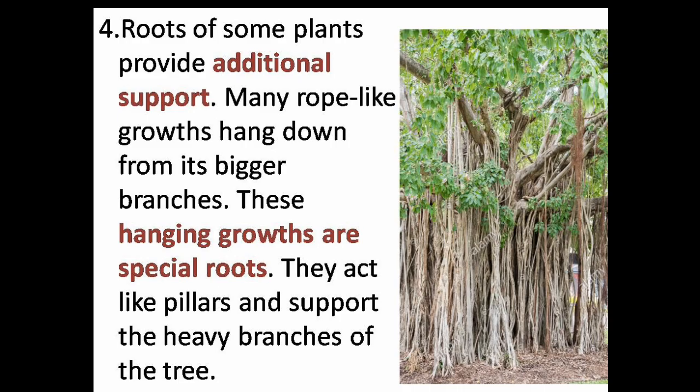Roots of some plants provide additional support. Many rope-like growths hang down from the bigger branches of the tree. These hanging growths are special roots that act like pillars and support the heavy branches of the tree. For example, the banyan tree.